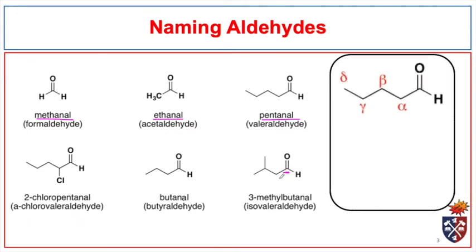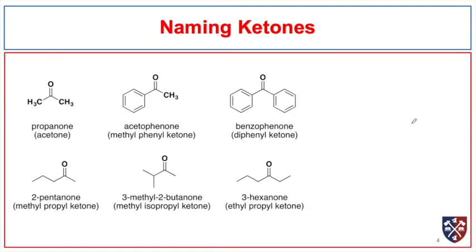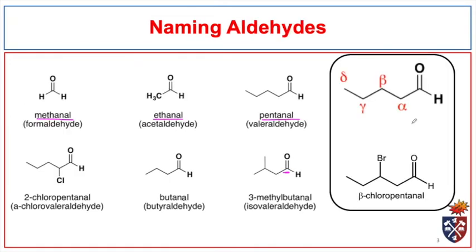We can also use Greek letters to indicate the position of carbons relative to the carbonyl group, so that the first carbon next to the carbonyl group is alpha, then beta, gamma, etc. Here we see an example — we can call this beta-chloropentanal. Also be aware that this is the three position, so we could also call it 3-chloropentanal.